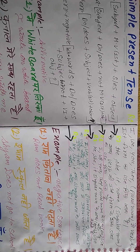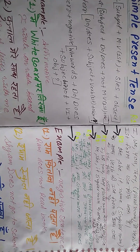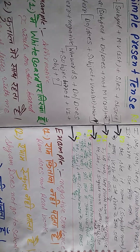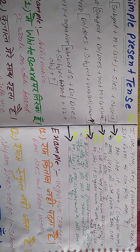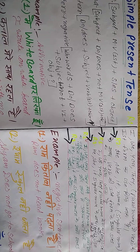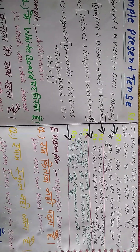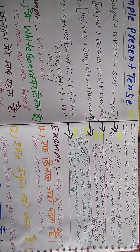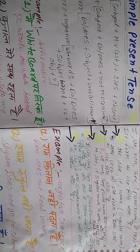Affirmative का rule देखेंगे. Rule number 1: I, We, You, They और plural nouns के साथ verb की base form का use किया जाता है. Rule number 2: He, She, It और singular nouns के साथ verb की base form के साथ s/es का use किया जाता है.